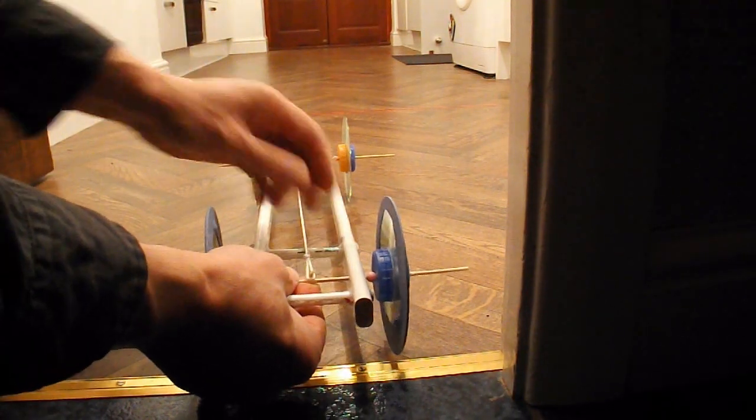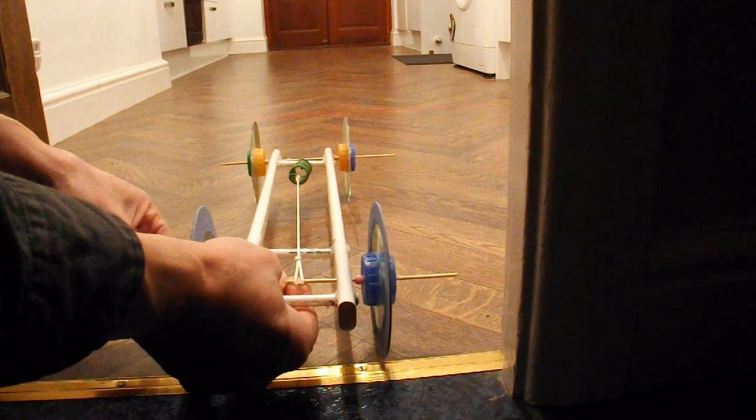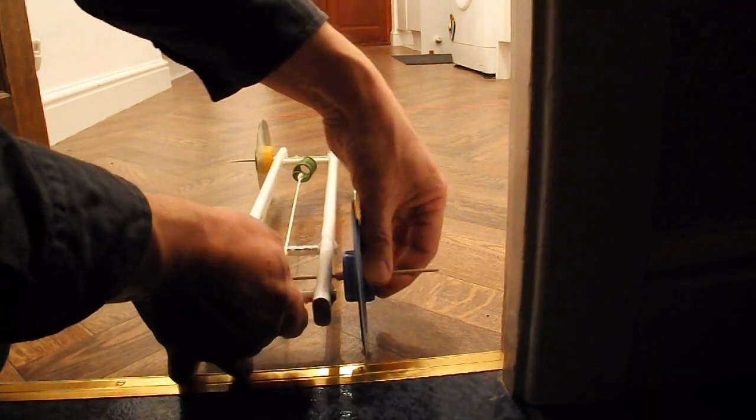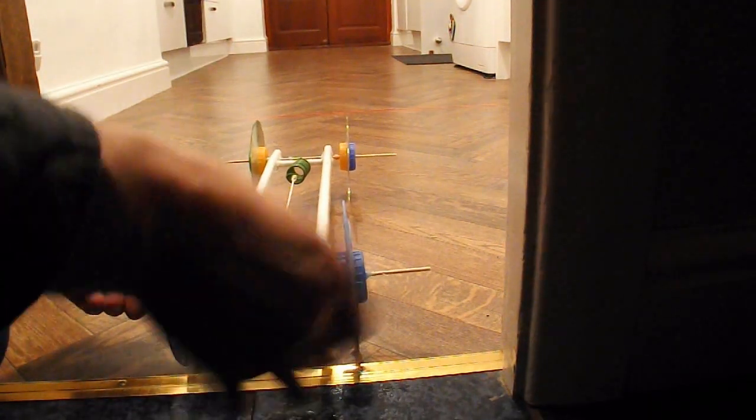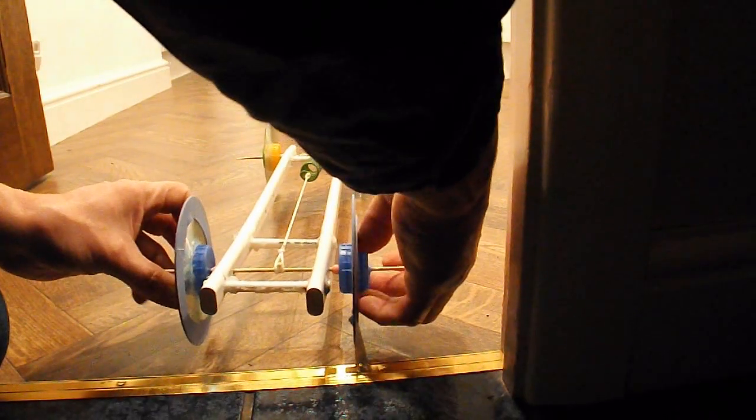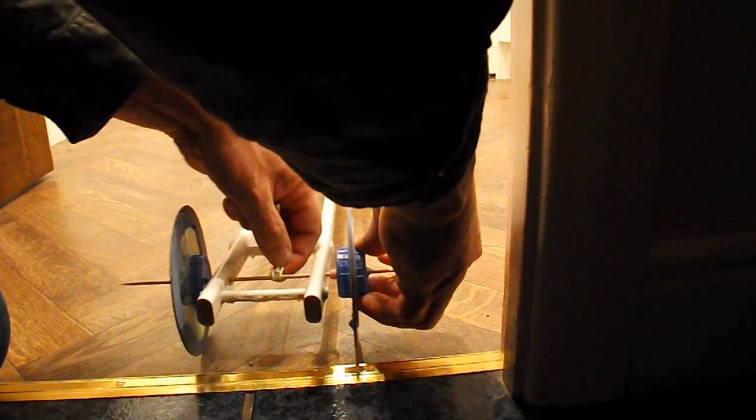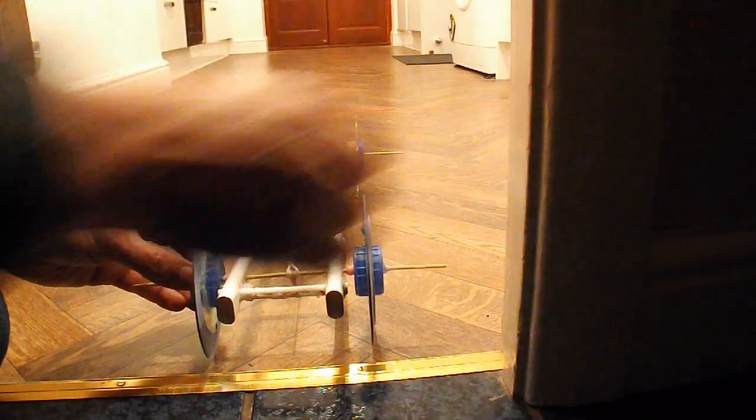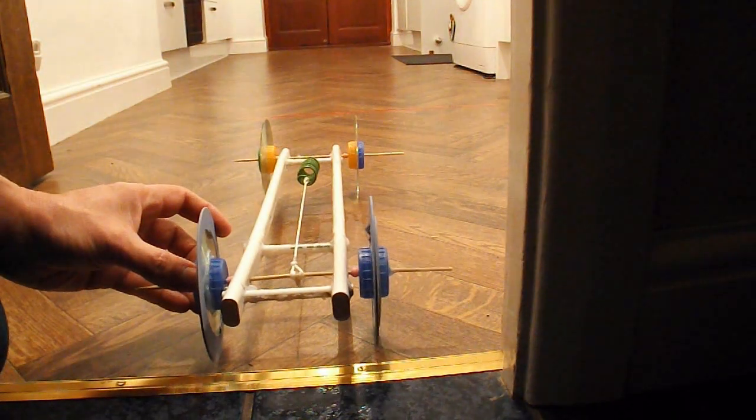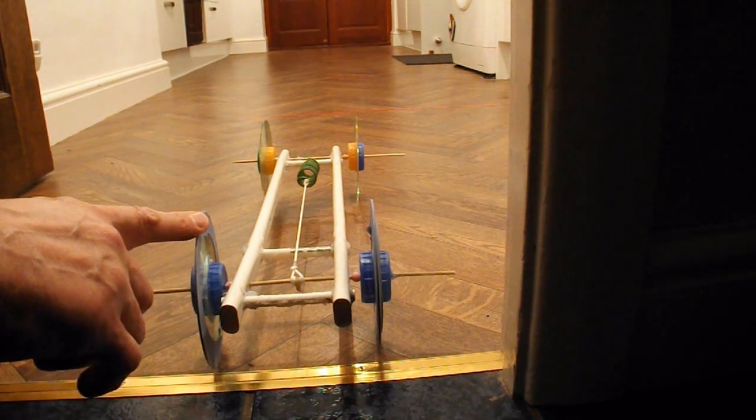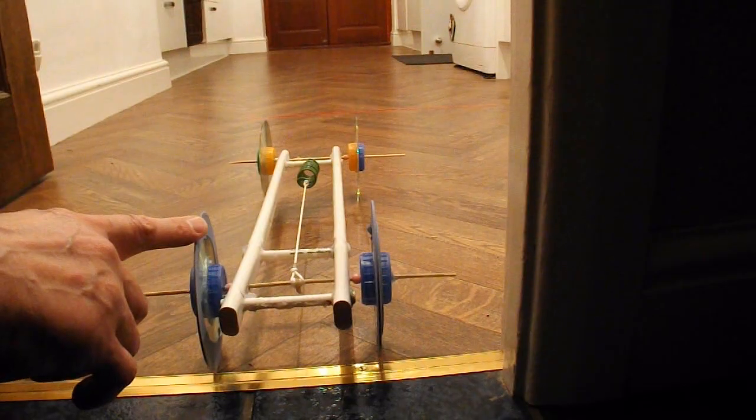I think I could have made the back axle thicker because I don't think the barbecue skewer is really strong enough for this. I can feel it bending as I'm turning it. It's only about one turn on there, maybe one and a half turns. I think that spring is a bit strong.